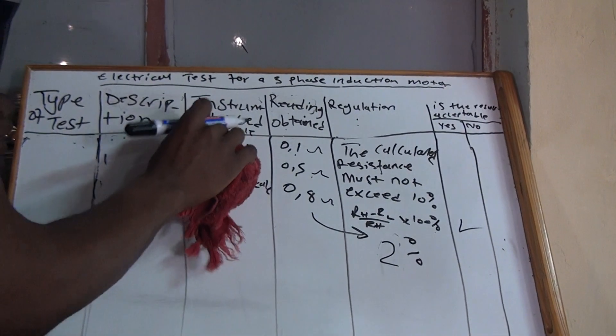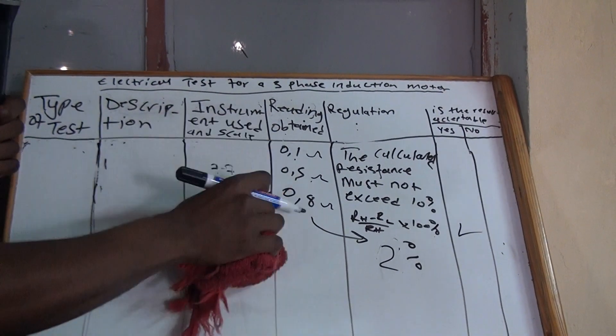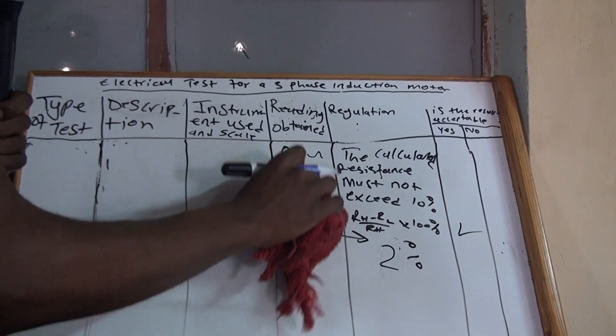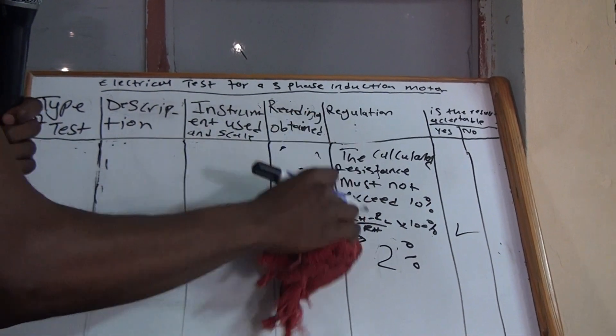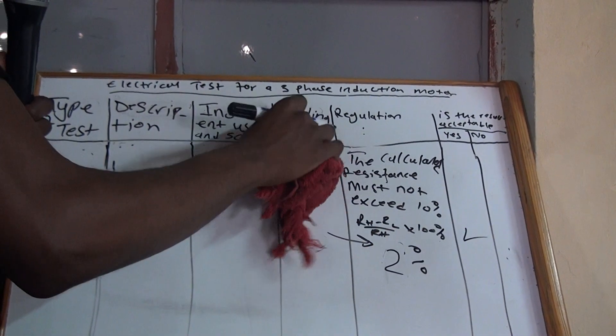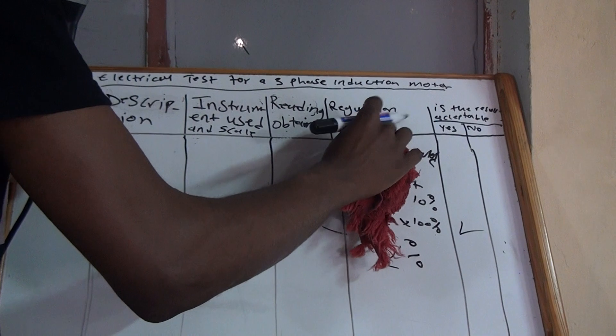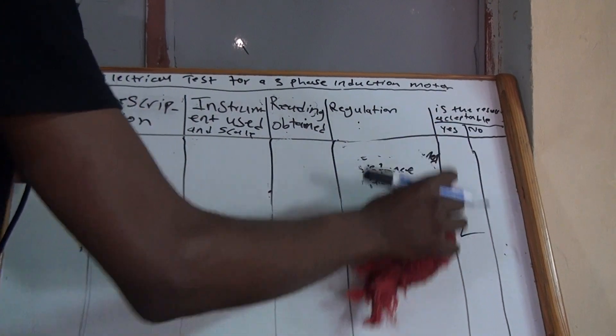Always remember to write the multimeter used and specify which scale — in this case the ohms scale.